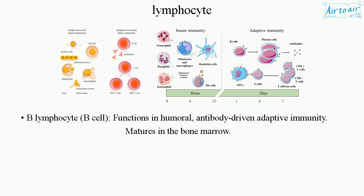B lymphocyte (B cell): functions in humoral, antibody-driven adaptive immunity. Matures in the bone marrow.